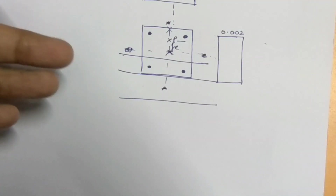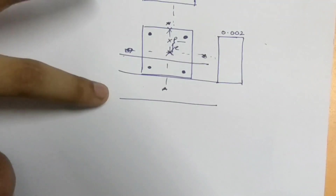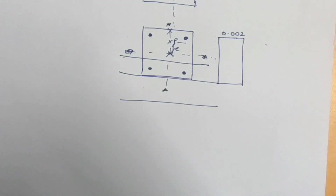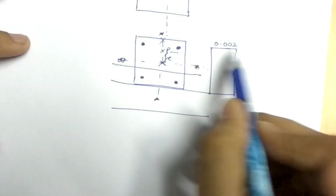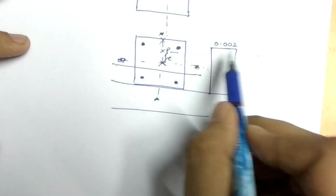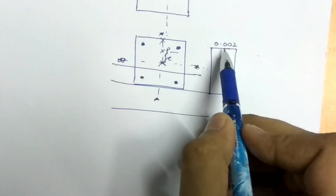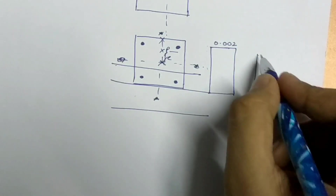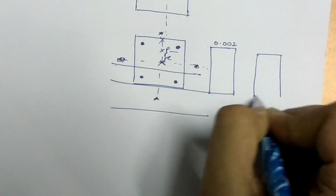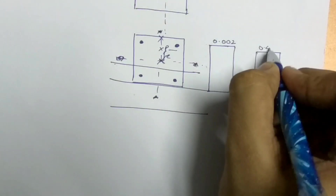Depending upon where the neutral axis is, there are 4 or 5 cases. The first case is where the load is concentric — it acts through the CG. In this case, the strain diagram is completely rectangular, with a maximum value of 0.002, and the stress is totally rectangular with a maximum value of 0.45.